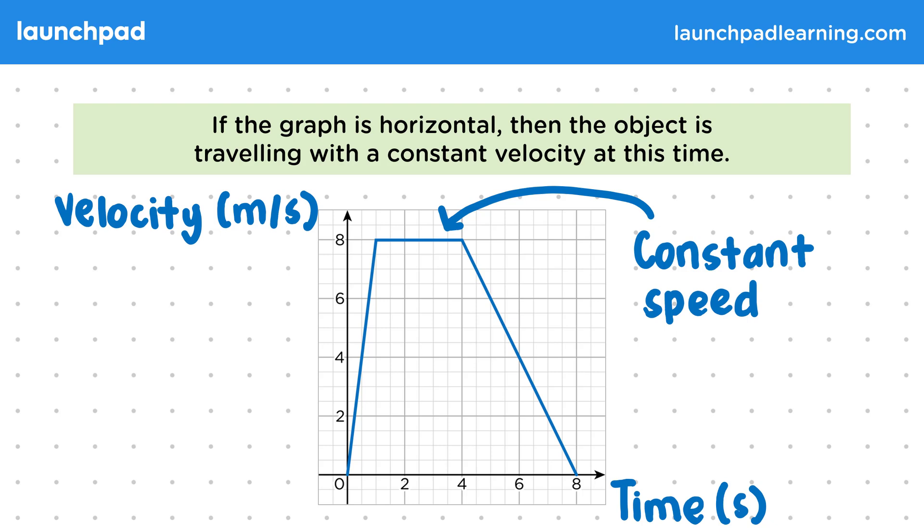Remember that acceleration is a measure of how velocity is changing. So if there is no change in velocity, then we know that there must be no acceleration. One thing to be very careful of is that the object is still moving during this flat section. It is not stationary. This is a very common error in exams, often because students get these graphs confused with distance-time graphs. Make sure you understand the difference between these types of graphs.